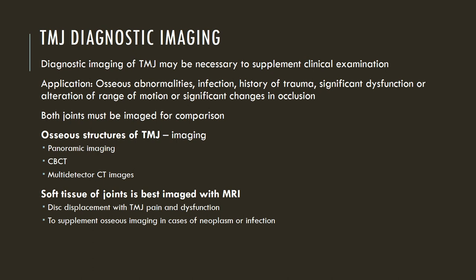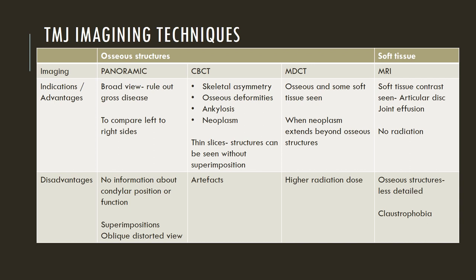For osseous structures of the TMJ, the preferred imaging modality would be either panoramic imaging or more detailed higher-resolution images like CBCT or multi-detector CT. For soft tissue of the joints, it is best imaged with MRI, especially in conditions like disc displacement with TMJ pain and dysfunction, and to supplement osseous imaging in cases of neoplasm or infection. Panoramic, CBCT, and multi-detector CT scans are generally useful for viewing the osseous structures, whereas soft tissue imaging is best done with MRI to see the disc and surrounding soft tissue area.